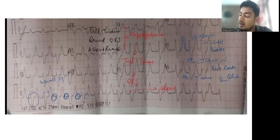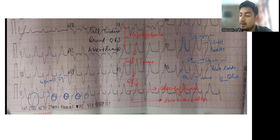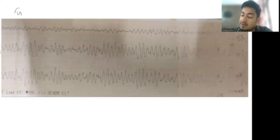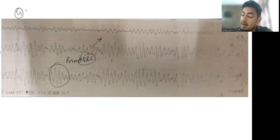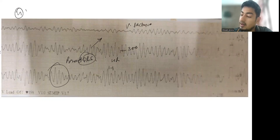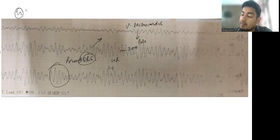In the fourth ECG, there is a broad QRS, the different QRS complexes are different from each other in morphology, and the heart rate is almost 300. This is an ECG of ventricular tachycardia. Since the morphology is different between complexes, it is polymorphic ventricular tachycardia.